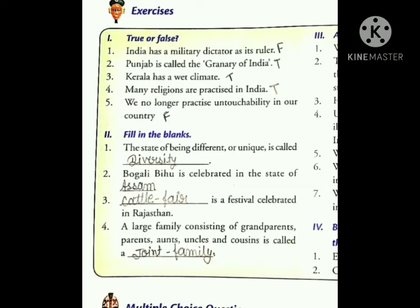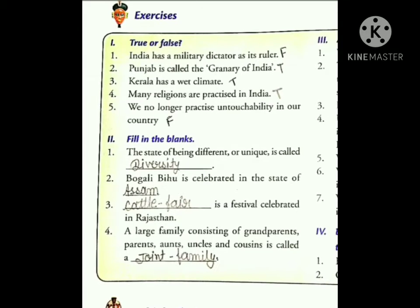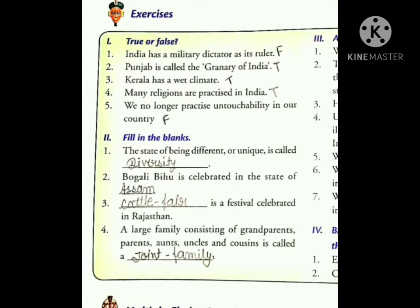The second question is: Bengali Bihu is celebrated in the state of Assam. The third is: the festival celebrated in Rajasthan is called the Cattle Fair. The fourth number: a large family consisting of grandparents, aunties, uncle and cousins is called a joint family.